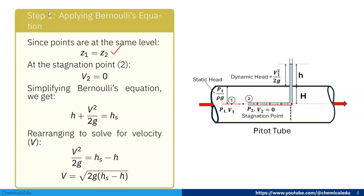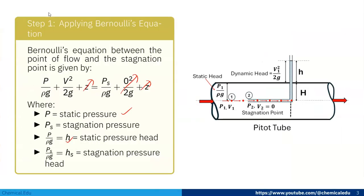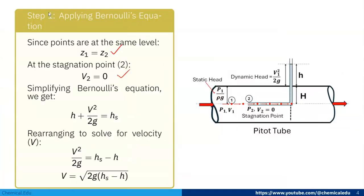At the stagnation point v2 is zero. Simplifying Bernoulli's equation we get: h + v²/(2g) = h_s. Rearranging to solve for velocity v: